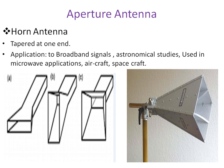The horn antenna is tapered at one end, which is the mouth, through which it will accept or radiate electromagnetic signals based on the application — whether used as a transmitting or receiving antenna. This kind of antenna can be used for broadband signals, astronomical studies, microwave applications, and is also usable in aircraft and spacecraft.